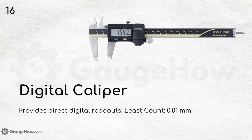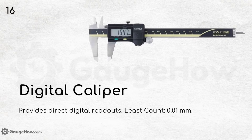Digital caliper. It provides direct digital readouts and the least count is 0.01 mm. A digital caliper makes measurement much easier than a normal vernier or dial caliper.